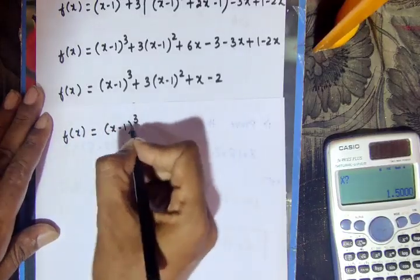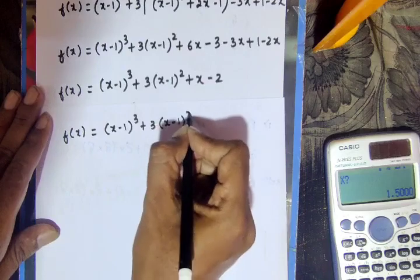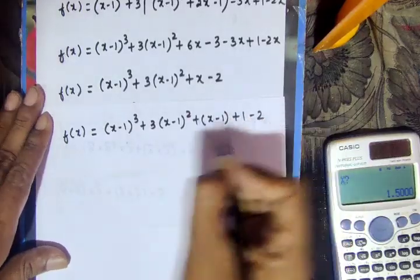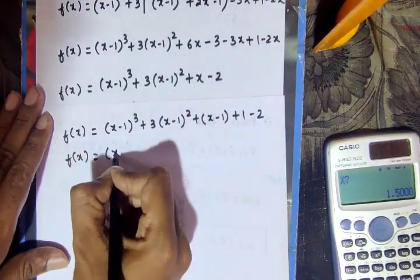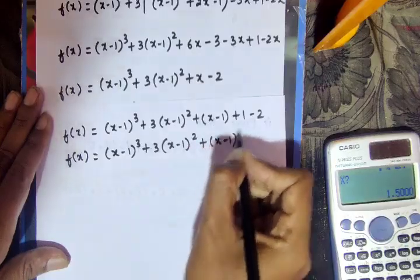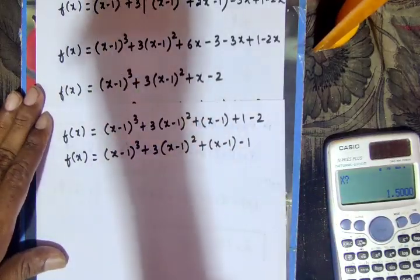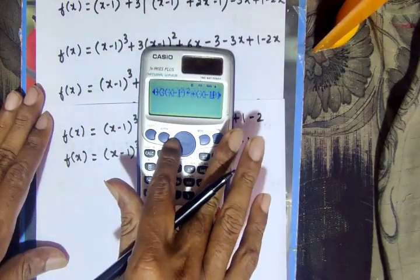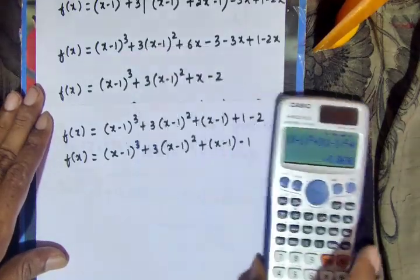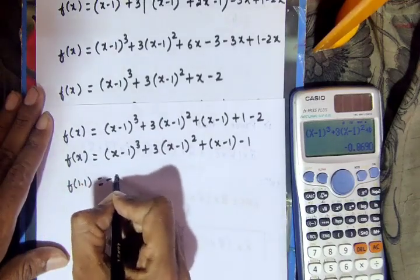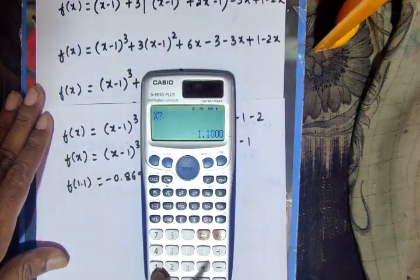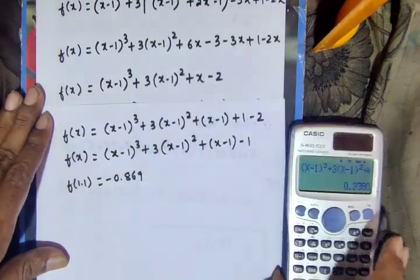Therefore f(x) = (x-1)³ + 3(x-1)² + (x-1) + 1 - 2, which gives f(x) = (x-1)³ + 3(x-1)² + (x-1) - 1. The numerical estimates give values approximately 1.1, -0.869 at x = 1.5, giving 0.3750.